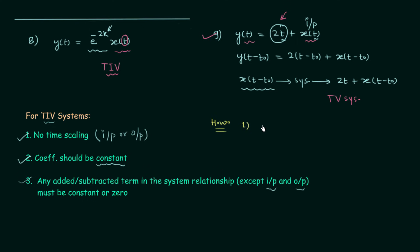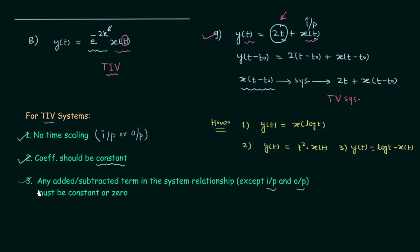For homework: Problem 1 — y(t) = x(log t); Problem 2 — y(t) = t²·x(t); Problem 3 — y(t) = log(t) − x(t). You can easily determine if these systems are time invariant or variant by checking the three conditions. For any questions based on time variancy, check the three conditions and you will have your answer. In the next lecture we will solve more questions based on time invariant and time variant systems.